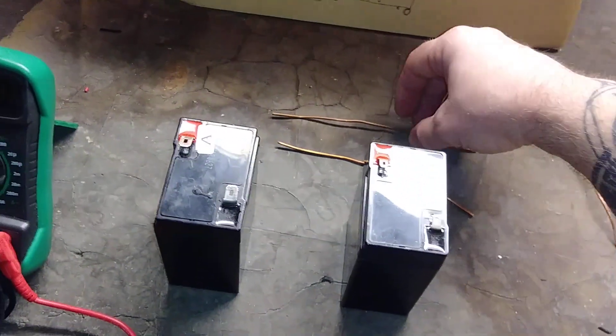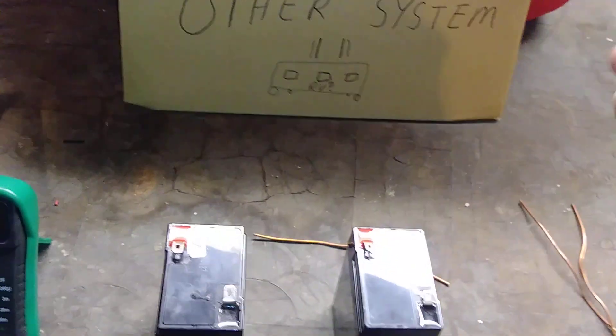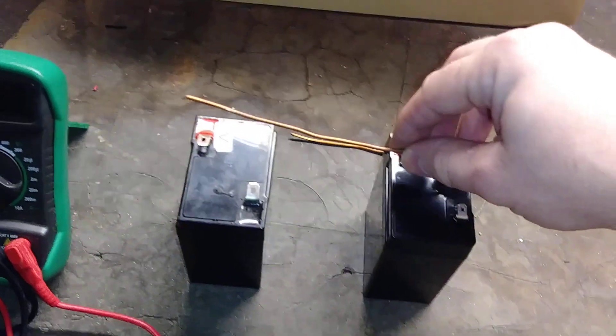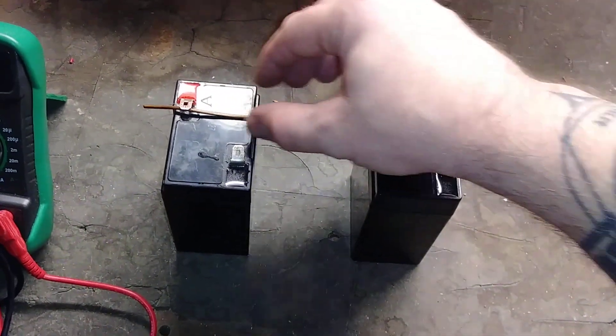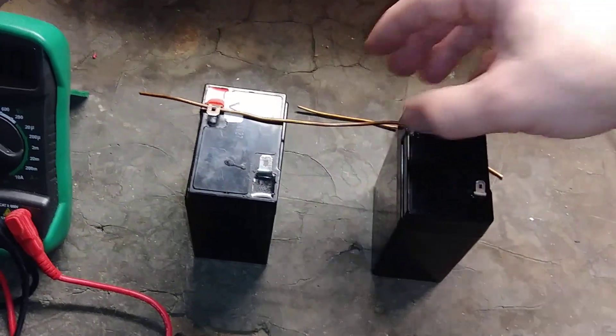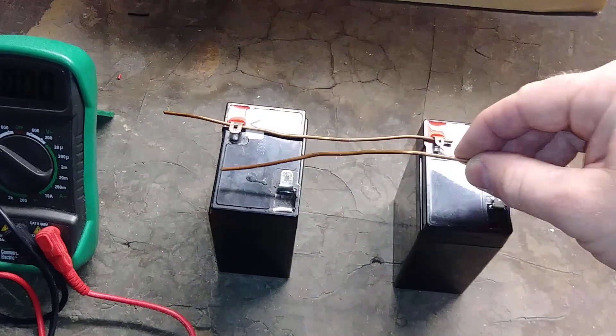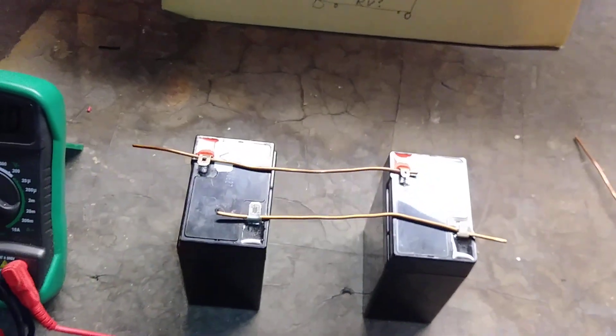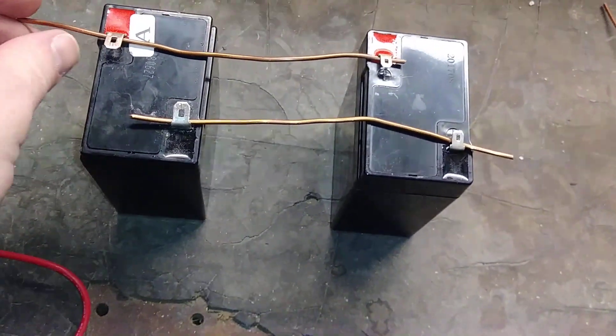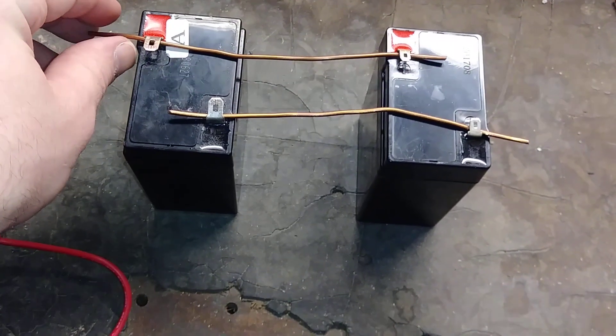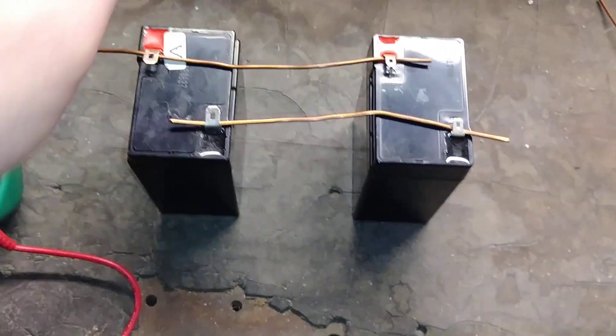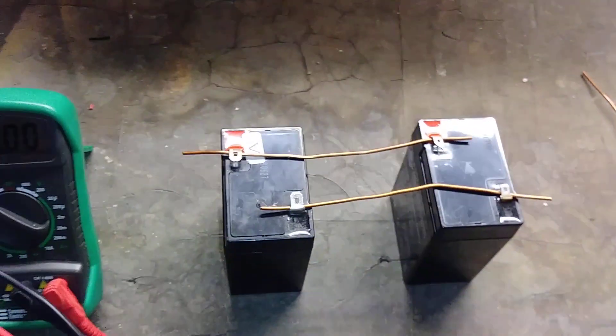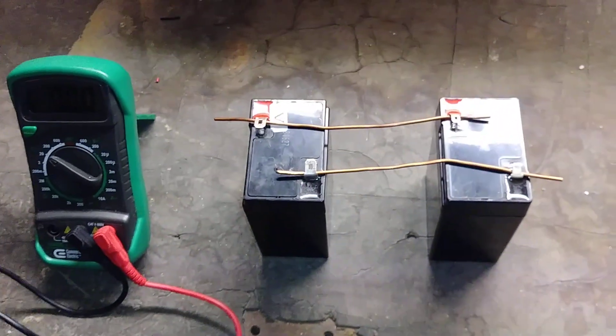The first one we're gonna do is a parallel series. With bigger batteries I'd be using jumper cables, but with these guys all I need is a really good conductor like copper. A parallel series is exactly how it sounds - they're just going parallel, so positive goes to positive and negative goes to negative. What we just created is still a six-volt battery, but now the capacity is basically doubled since they're essentially the same battery with the same amount of amps.